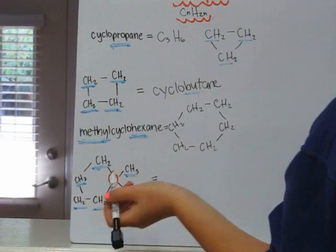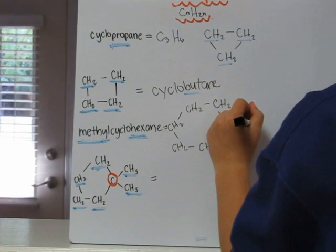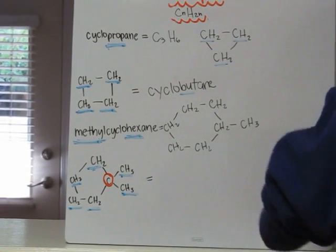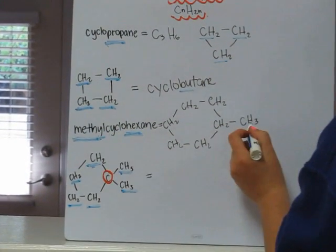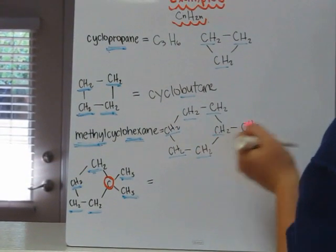And we have one branch, methyl. We can put it anywhere. It doesn't matter where it goes because they're in a continuous chain. So our methyl is here, and our one, two, three, four, five, six carbons.